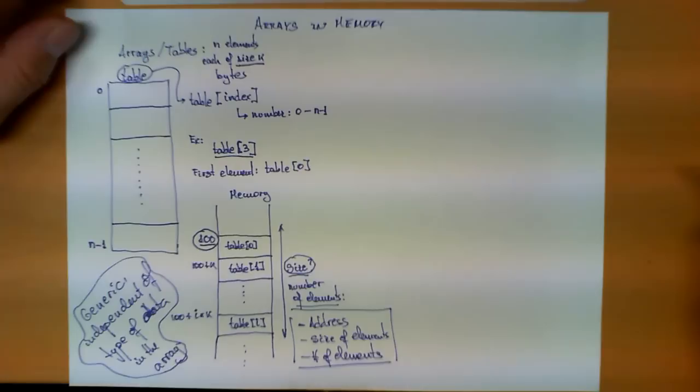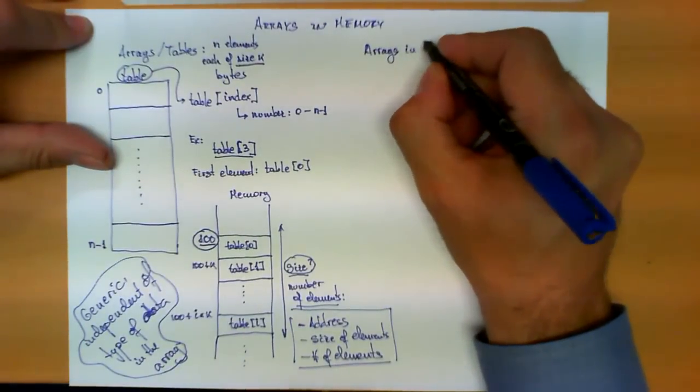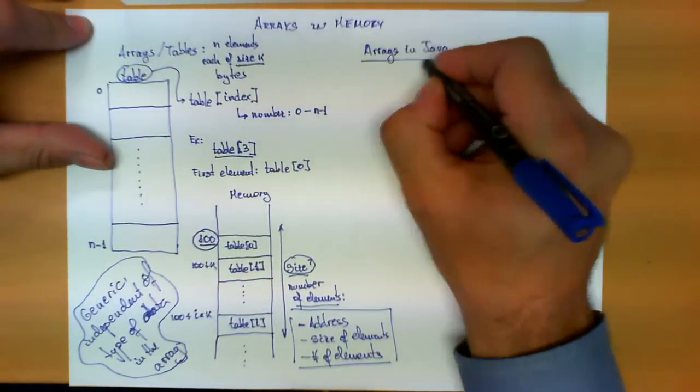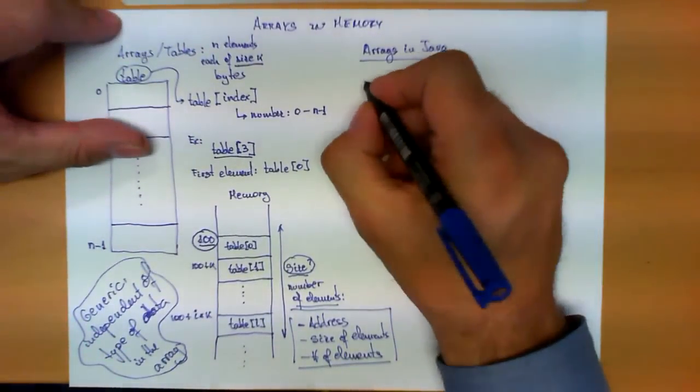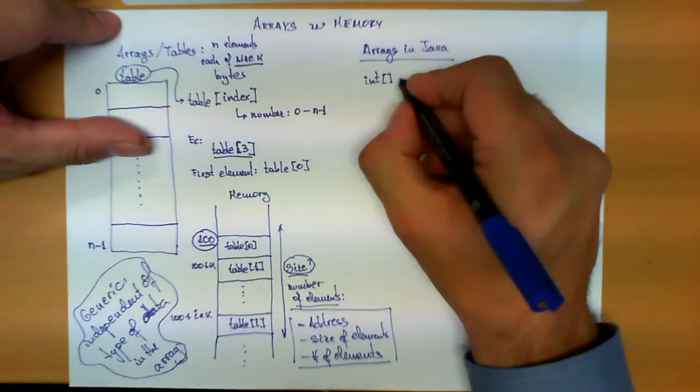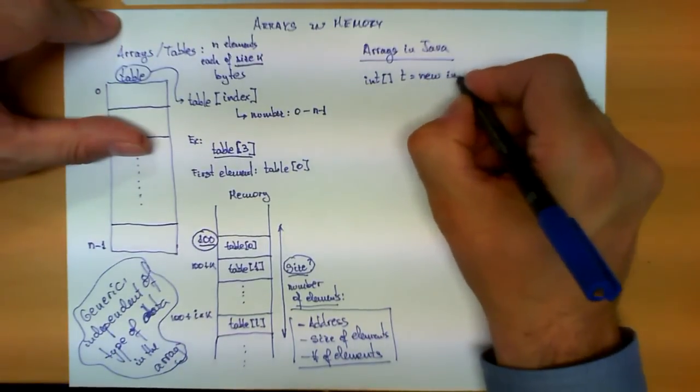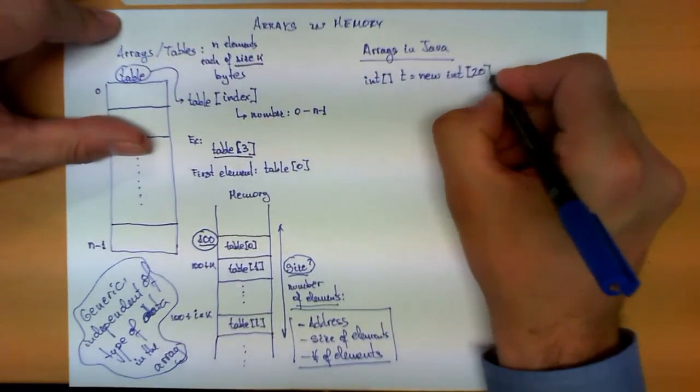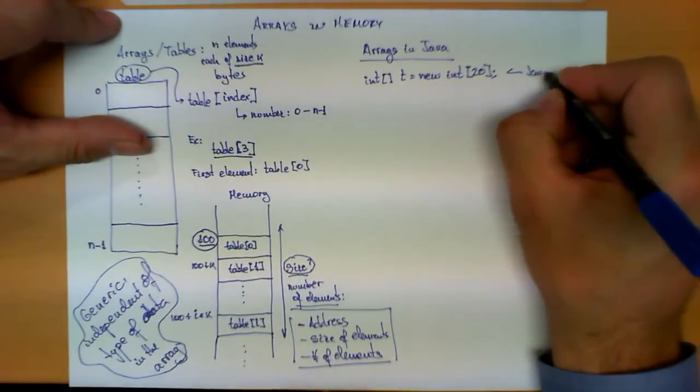Now, let's follow an example and see how arrays are stored, but in Java. We are going to see a specific example of a programming language. For example, the way you declare an array of 20 integers in Java would be like this. This is directly Java code.